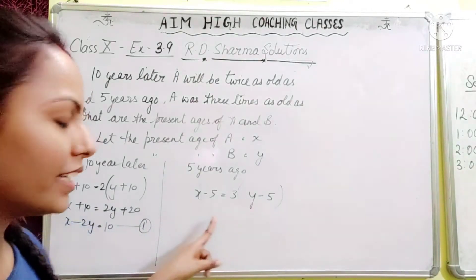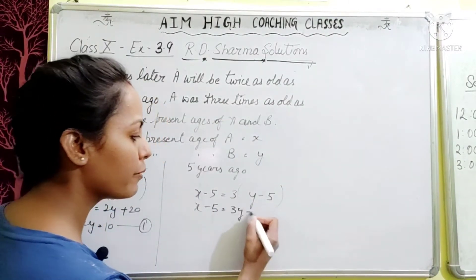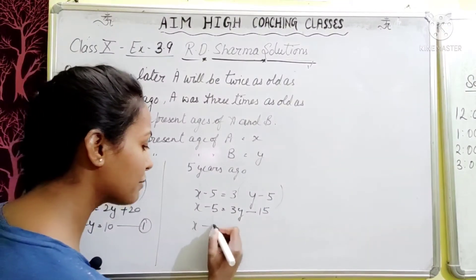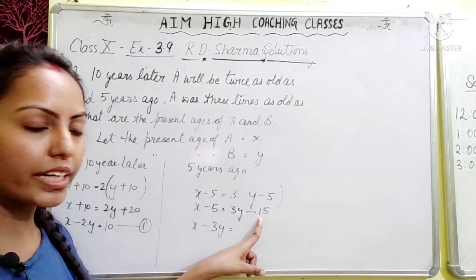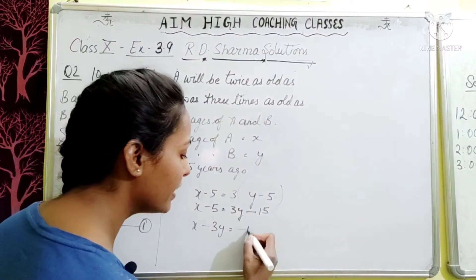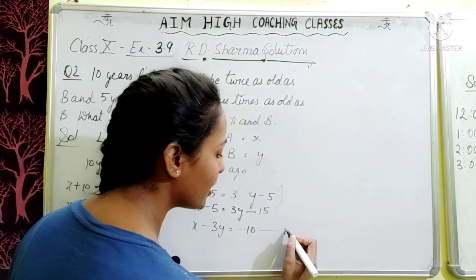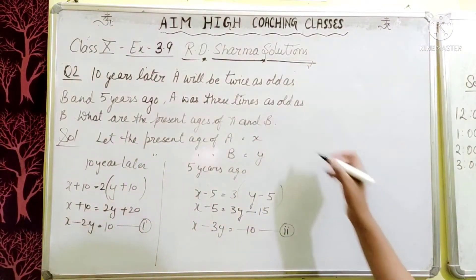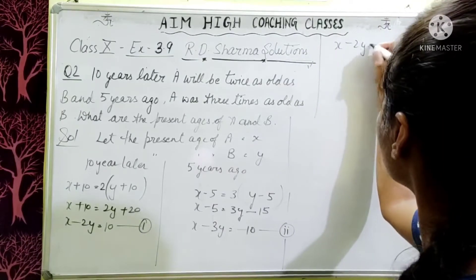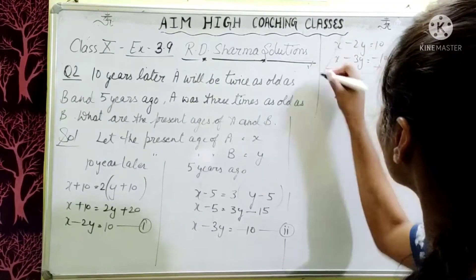For 5 years ago: A was 3 times as old as B, so x − 5 = 3(y − 5). Expanding: x − 5 = 3y − 15. Rearranging variables to one side: x − 3y = −15 + 5 = −10. This is equation 2.